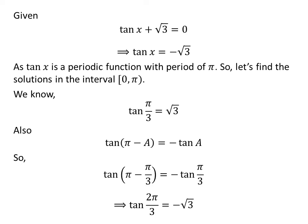So, the only solution to the equation tangent of x is equal to minus square root of 3 is 2 times π upon 3 in the interval of 0 to π.